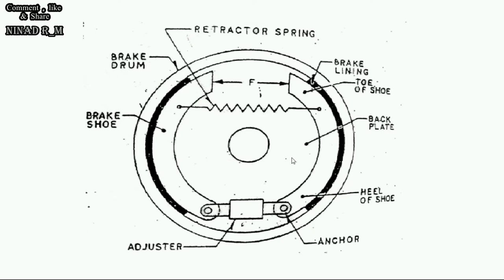First, see the construction. It has an adjuster, brake shoe, and brake lining for friction. There is a brake drum, and this is the back plate on the back side of the drum. There is also the anchoring of the brake shoe to this adjuster.